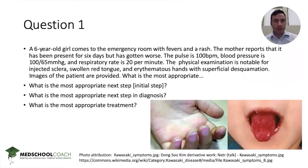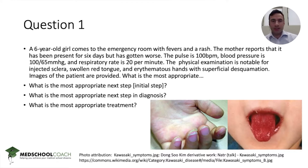A six-year-old girl comes into the emergency department with fevers and a rash. The mother reports that it had been present for six days, but it's gotten worse. The pulse is 100 beats per minute, blood pressure is 100 over 65, and the respiration rate is 20 per minute. The patient has injected sclera.